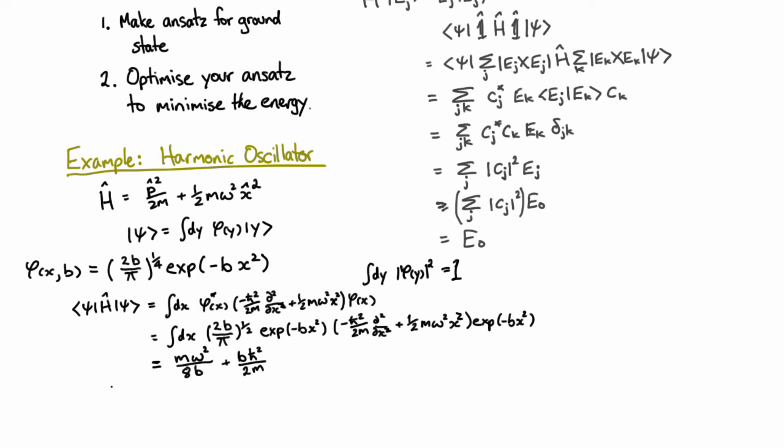What's the value of b that gives us the least of this? Well, what we do is we take the derivative - the derivative of this with respect to b. And we set the derivative to zero. And so now we've got the optimum value of b.